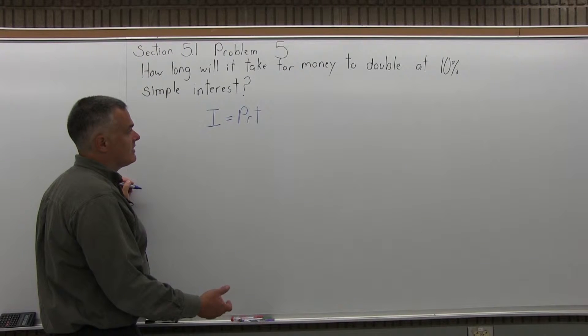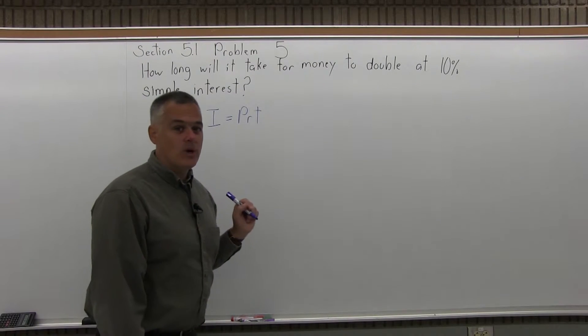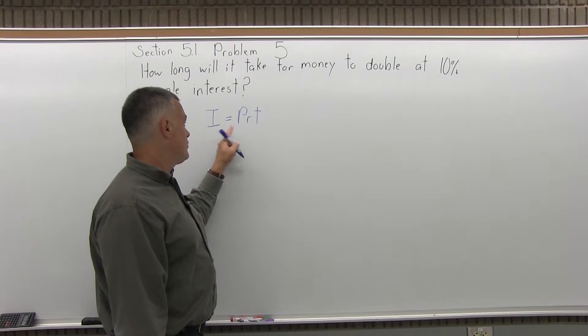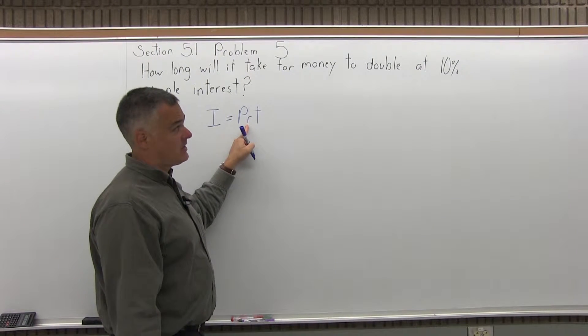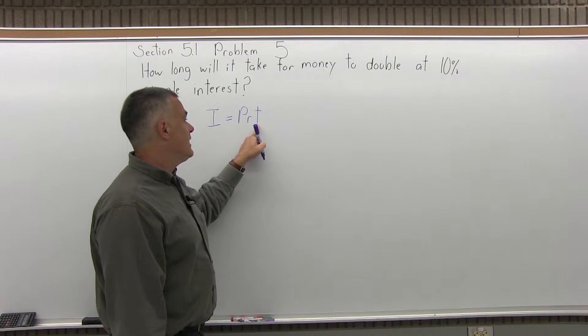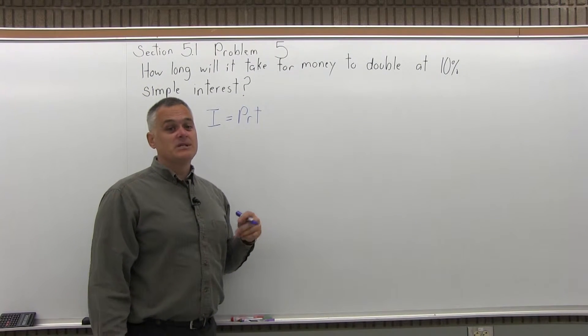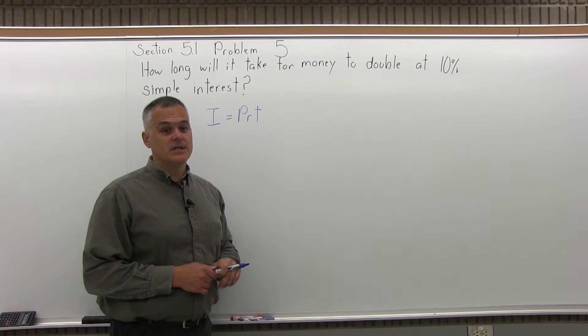And it seems like there are more unknowns. How long will it take for money to double at 10%? Well, what's the principle? What's the interest? I know the rate. The rate is 10%, and they want the time, but it seems that these are unknown also. That's what makes this problem seem a little bit more difficult than it is.